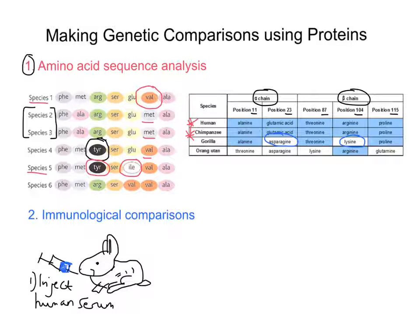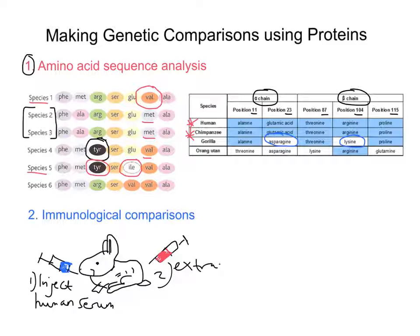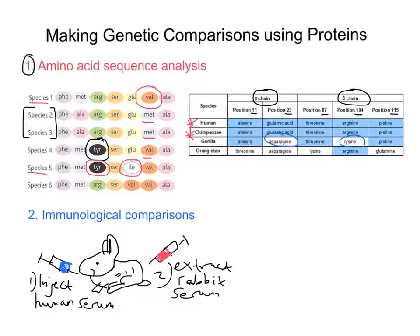Once we've got those anti-human albumin antibodies produced, we extract some of the rabbit serum, which contains anti-human antibodies. That rabbit serum can then be added to the serum of other species.